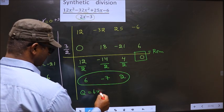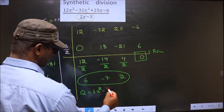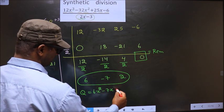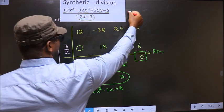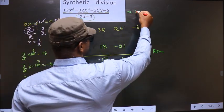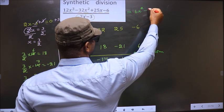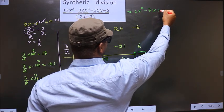That is 6x square minus 7x plus 2. So now this equals 6x square minus 7x plus 2.